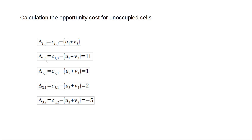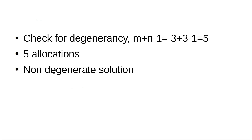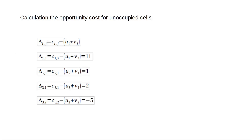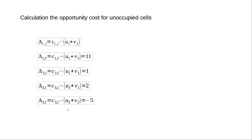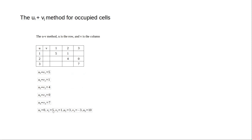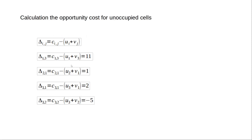The opportunity cost for an unoccupied cell is the cost of the cell minus (ui + vj) for that cell. For cell (1,3): the cost is 8, u1 = 0, v3 = −3, so the opportunity cost is 8 − (0 + (−3)) = 11. For cell (2,1): the cost is 9, u2 = 3, v1 = 5, so 9 − (3 + 5) = 1. Similarly we calculate the opportunity cost for all unoccupied cells and get: 11, 1, 2, and 5.